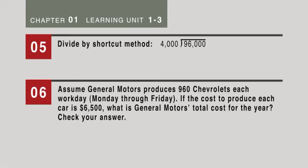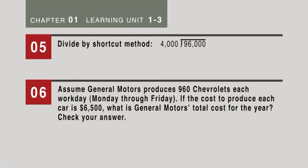In question number 5, divide by the shortcut method, 4,000 into 96,000. Here, you must drop the three zeros, so it'll be 4 into 96, which will be 24.